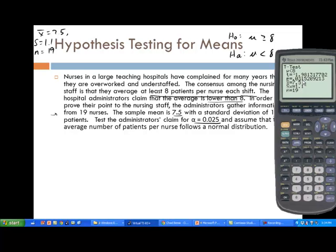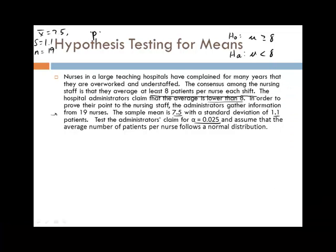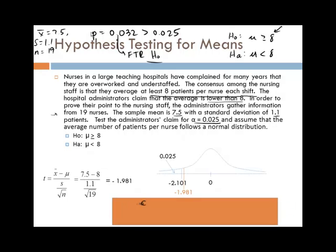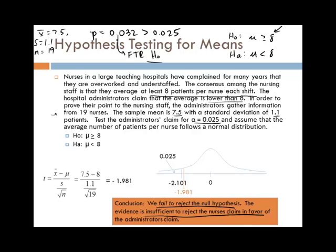0.0315 or 0.032, which is greater than alpha, which is 0.025. So it looks like we're going to fail to reject, which means that the status quo is unchallenged, which means the nurses are not necessarily wrong. And the administrators, based on the sample taken, are wrong. We failed to reject the null hypothesis. So the evidence is insufficient to reject the nurse's claim in favor of the administrators.